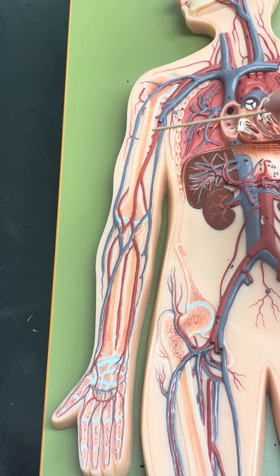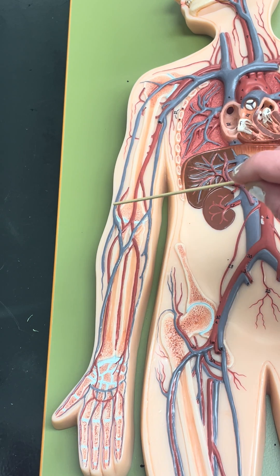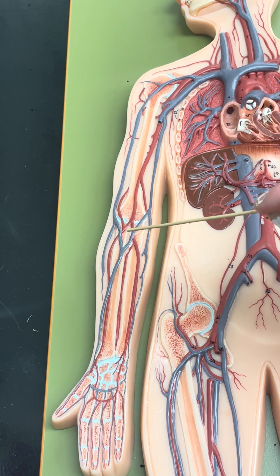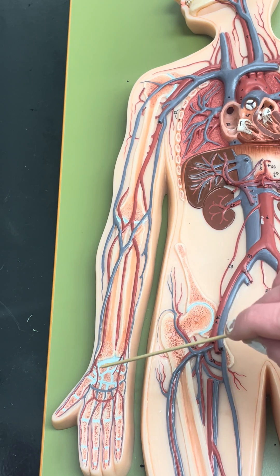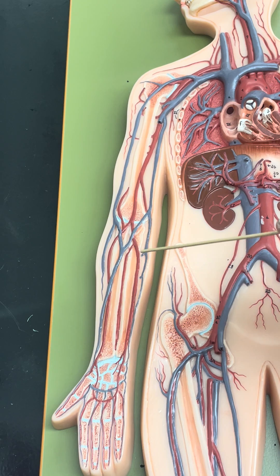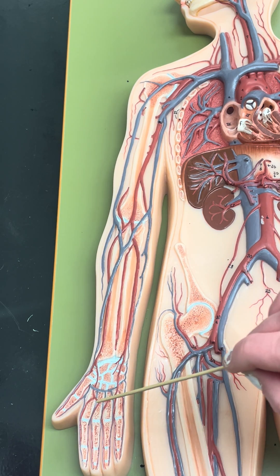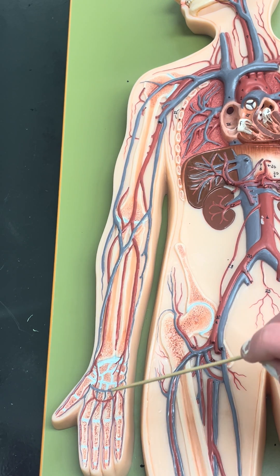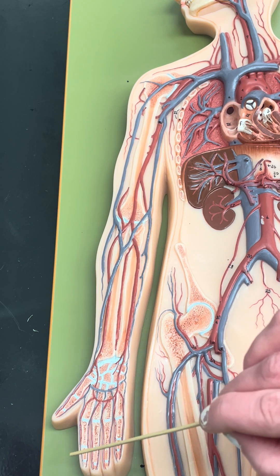It is then going to branch at the elbow into the radial artery coming down the thumb side and the ulnar artery coming down the pinky side. Those will then join via our palmar arch, and then we see the digital arteries going down the fingers.